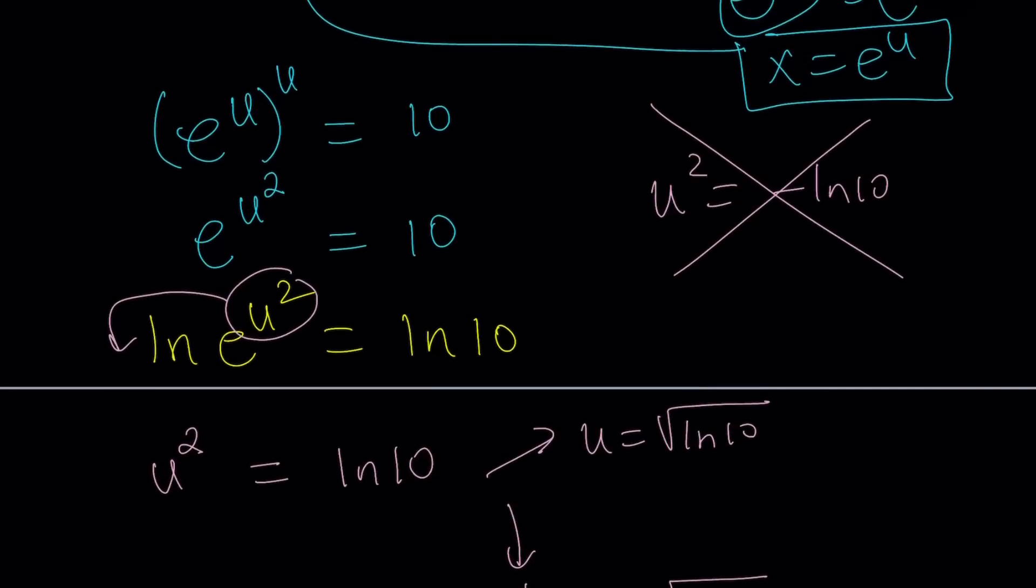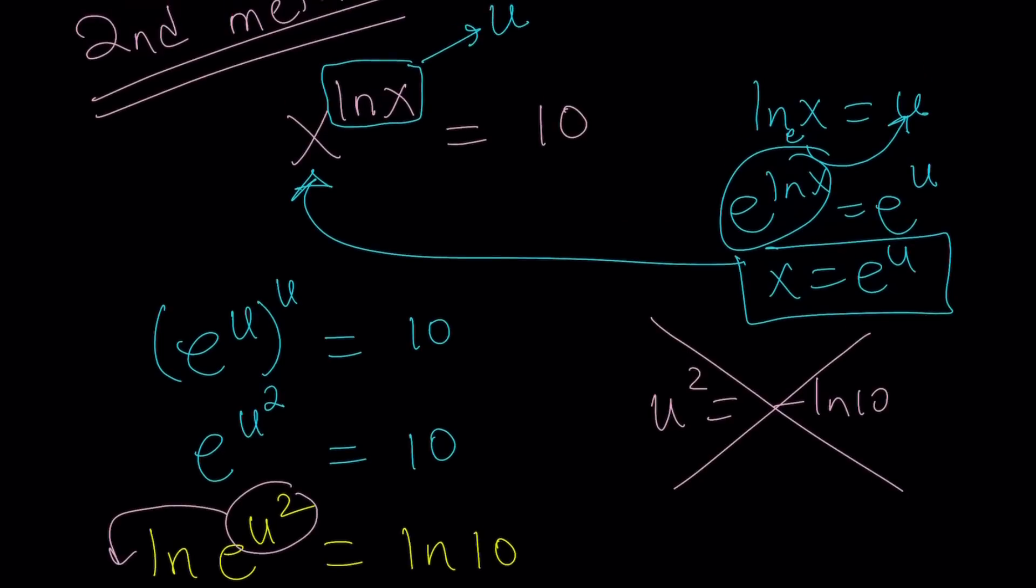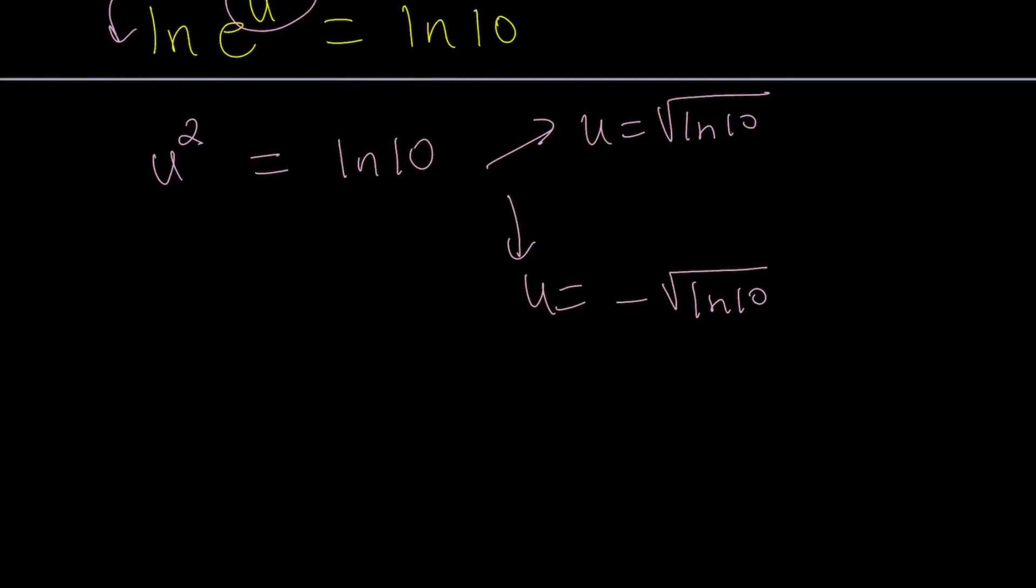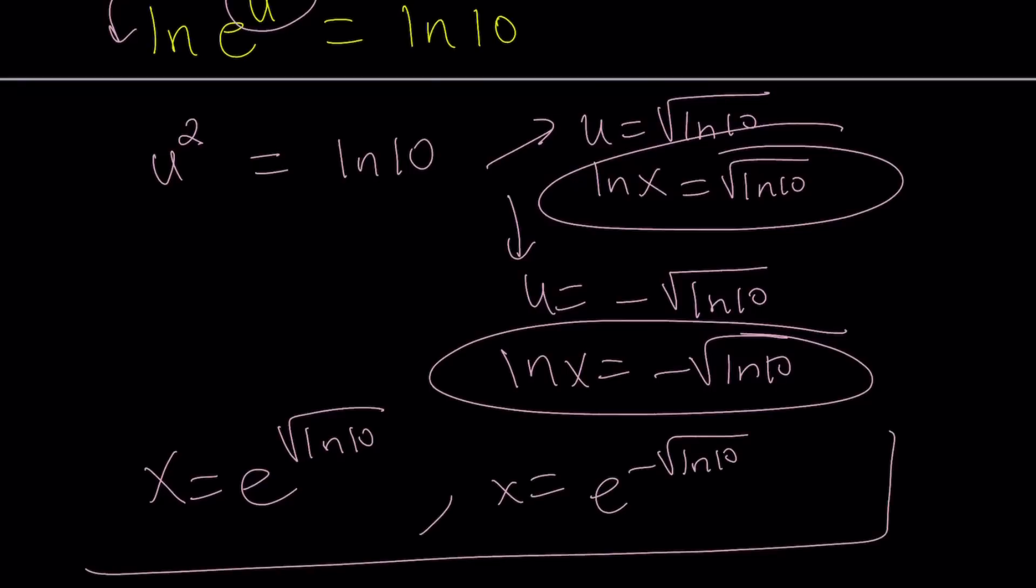But what is u? u is ln x. So if ln x is equal to square root of ln 10, I'll write the solutions down here. ln x equals negative square root of ln 10. So this gives us x equals e to the power square root of ln 10. And the second one gives us x equals e to the power negative square root of ln 10. And those are the same solutions that we got before.